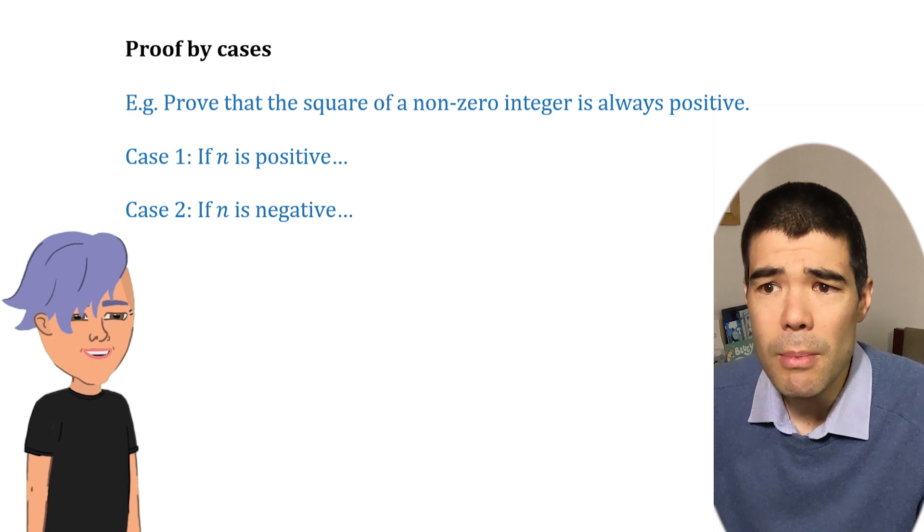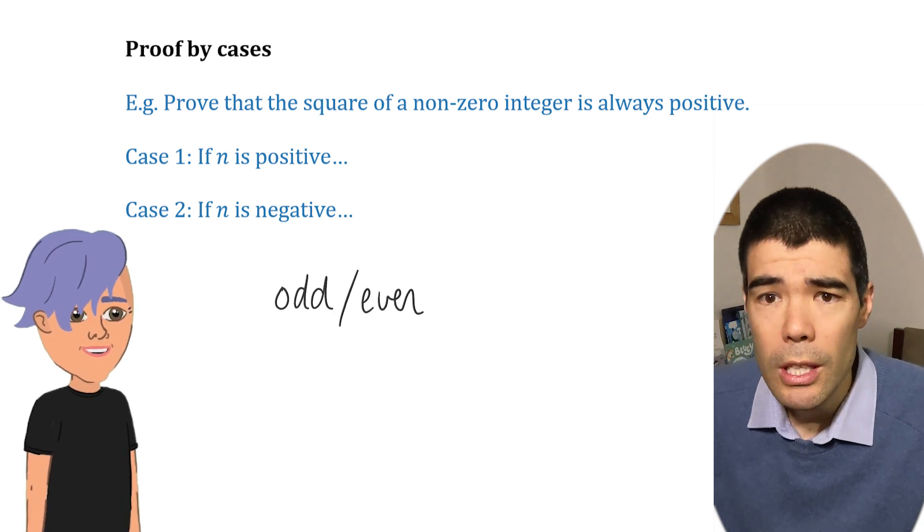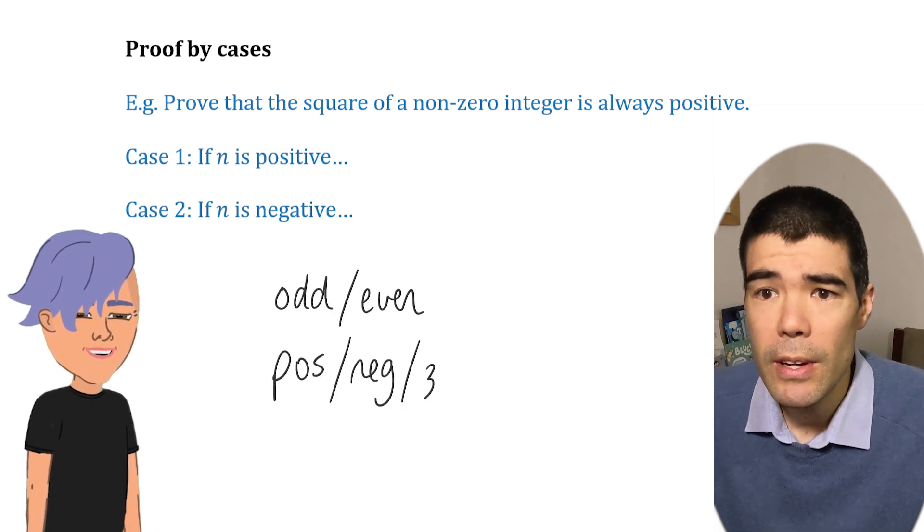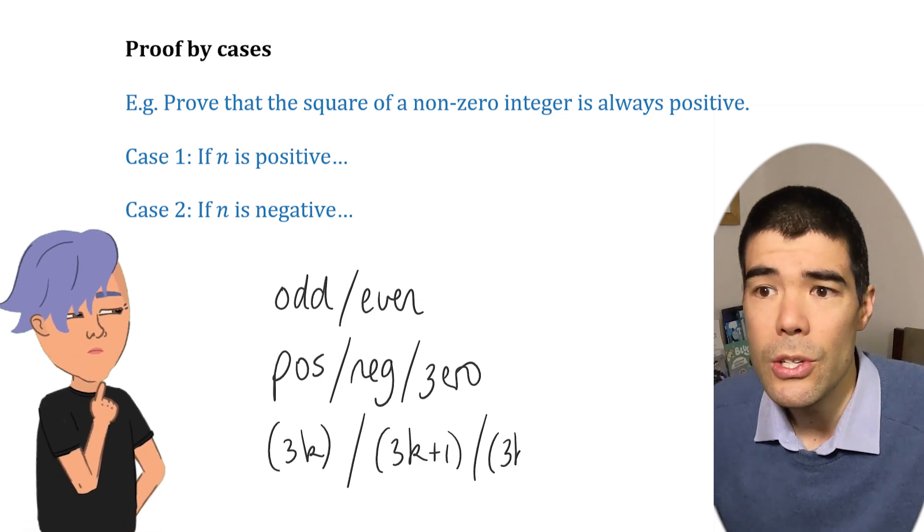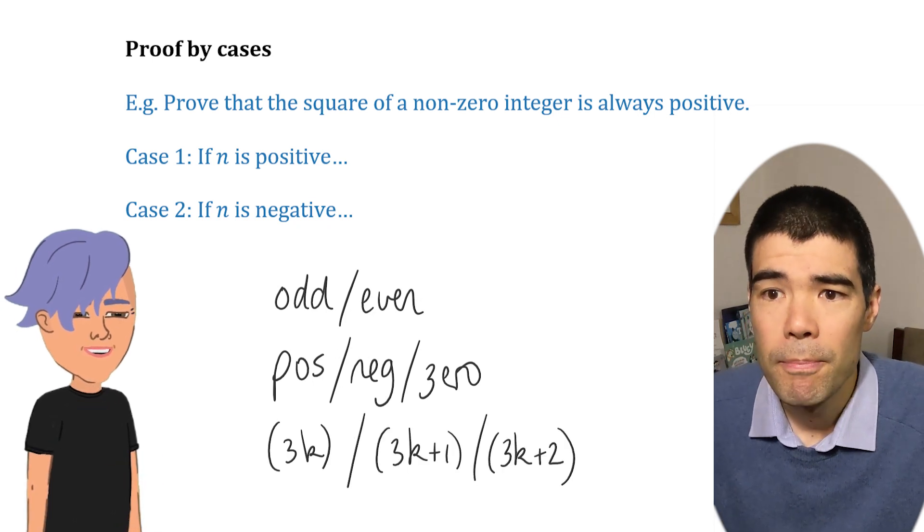Yeah, makes sense. Other common cases might be even odd, or you might have three cases like positive, negative zero, or the three possible remainders you could have after division by three.